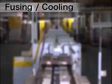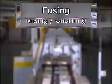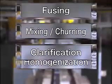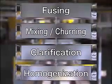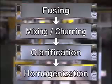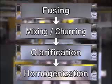To ensure optimum quality, the glass is cast into a continuous fusing machine. The glass is again melted at about 1300 degrees Celsius, mixed and churned, clarified and then homogenized. Having completed this process, the material becomes homogeneous liquid glass free of air bubbles.